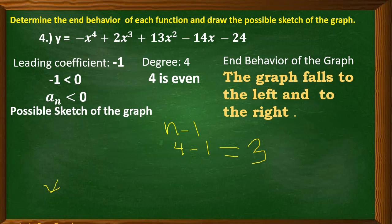For the possible sketch, n minus 1 = 4 minus 1 = 3 turning points. The graph falls to the left and to the right, with 3 turning points — 1, 2, and 3. It forms like the McDonald's symbol, which is actually an example of the graph of a polynomial function.